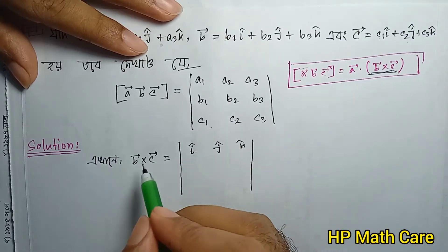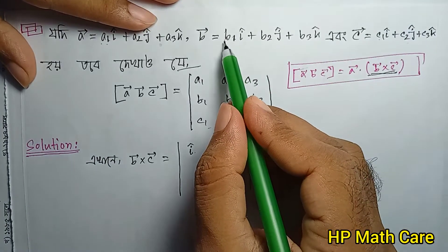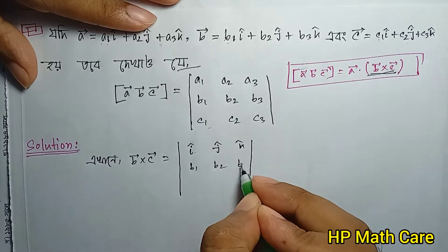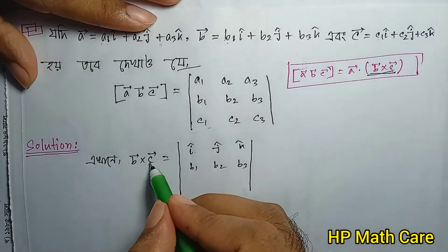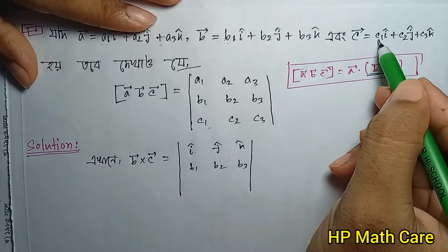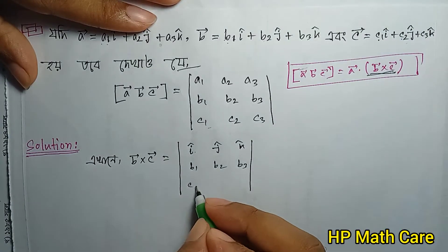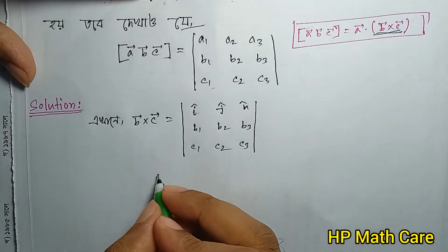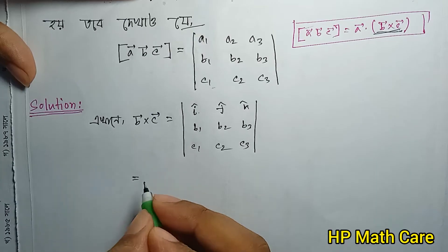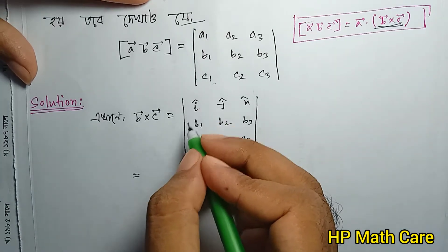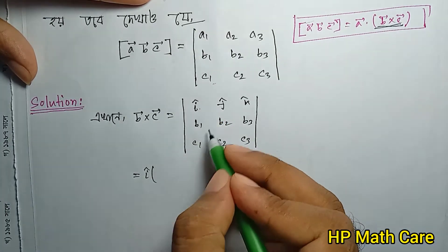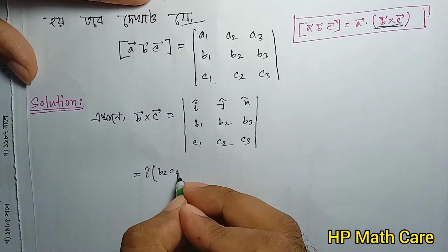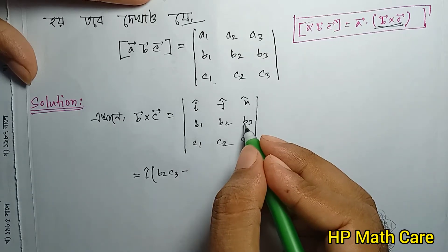I'm going to show you b cross c. So b cross c uses the determinant with b1 b2 b3 in the second row and c1 c2 c3 in the third row, expanded along i, j, k.